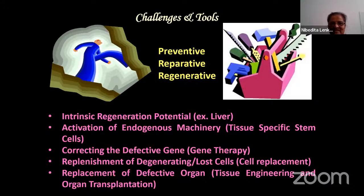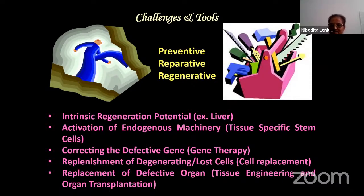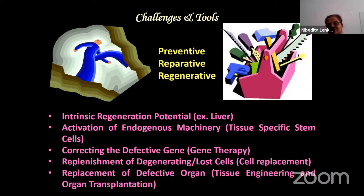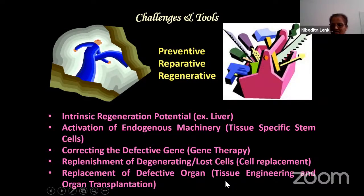The different tools can be preventive, reparative, or regenerative. Intrinsic regeneration potential: if we can activate the endogenous machinery - understanding how differentiation progresses, how cells remain quiescent, and how to activate mitotic state in quiescent populations in a controlled fashion - we can actually replenish degenerated cells. Other strategies include: correcting defective genes by gene therapy, replenishment of damaged or lost cells by cell replacement therapy, and replacement of defective organs by tissue engineering or organ transplantation.